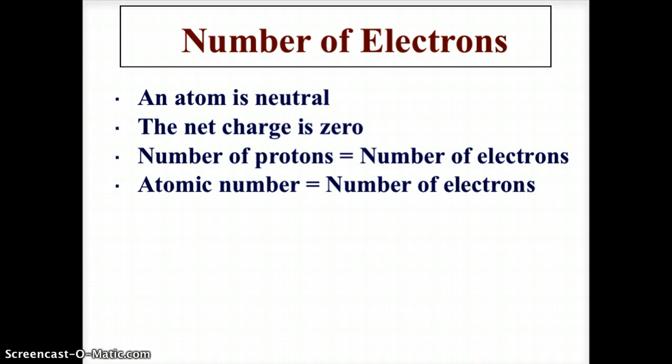Now typically in an atom, the electrons and protons have to be equal because we have balanced charges. Protons being positive, electrons being negative, the atom being neutral, the protons have to equal the electrons. So the number of protons equals the number of electrons, so the atomic number also equals the number of electrons.